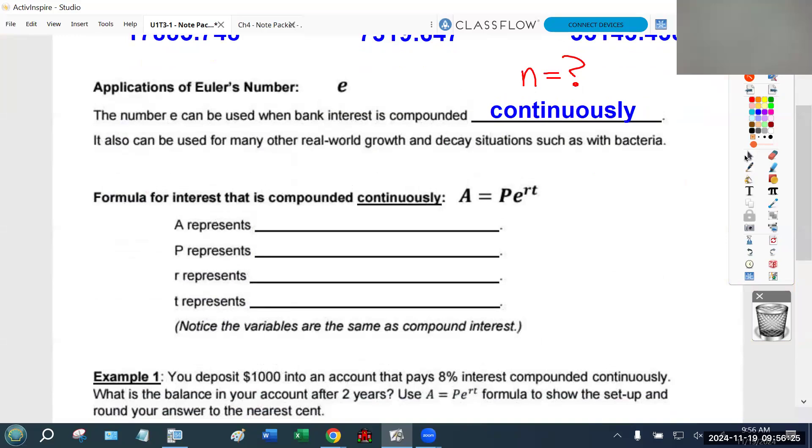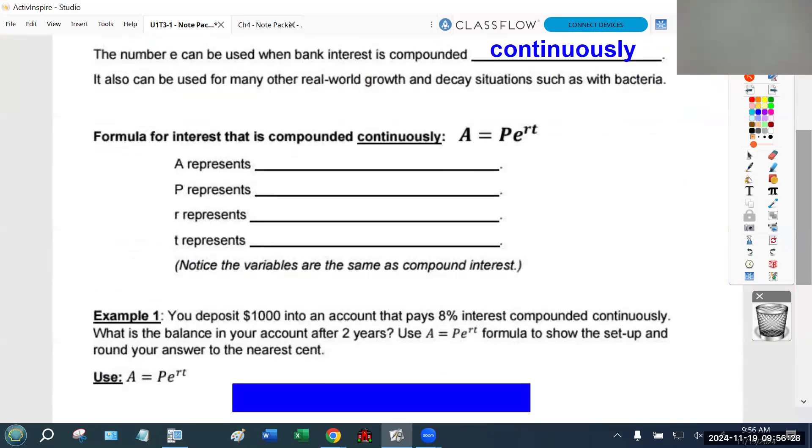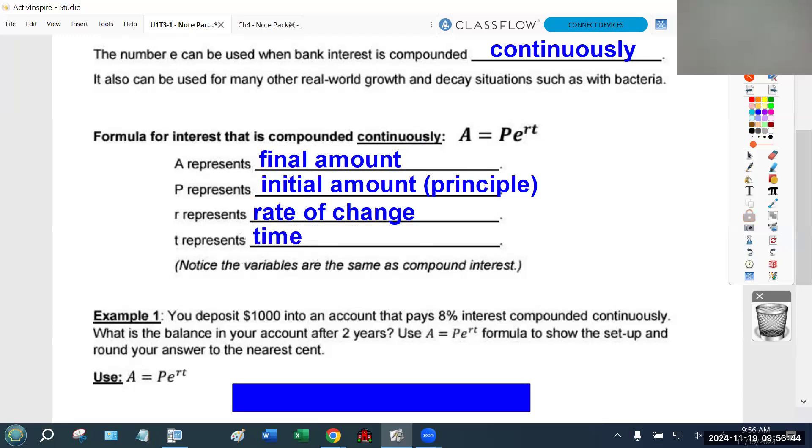However, if you're given a problem that says compounded continuously, you can't set N to any number. What would N be? There's no number there. So that changes it to the E-based formula. The formula for interest that is compounded continuously looks like this. All the letters are basically the same thing. A is still your final amount, P is still your initial amount, banks often call that principal. R still represents your rate of change, often an interest rate. T still represents time. The key here is realizing that you have to use this other formula, which has E for a base. This will be given to you on your test.